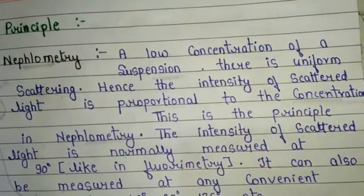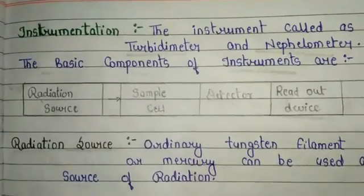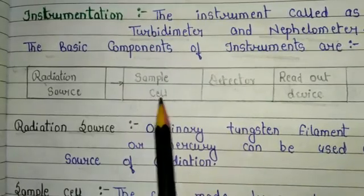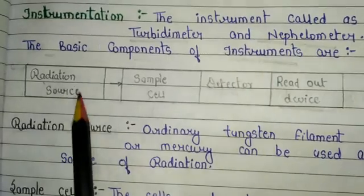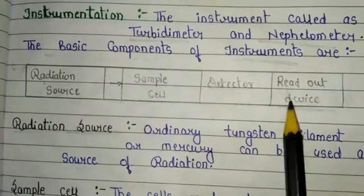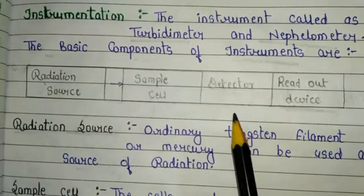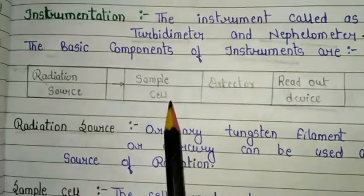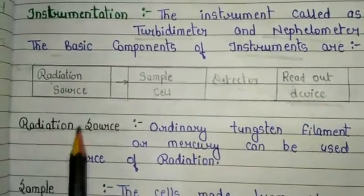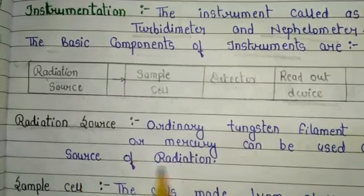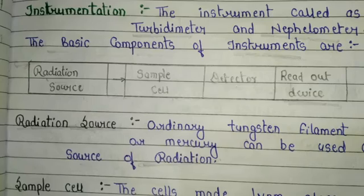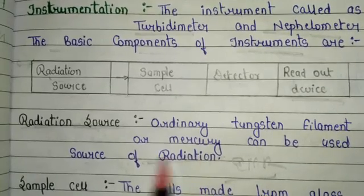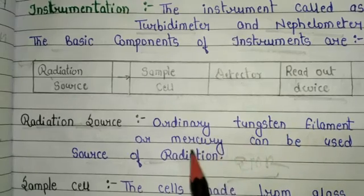Now the instrumentation part: the instruments are called turbidometer and nephelometer. The basic components of these instruments are: radiation source, sample cell, detector, and readout device. For the radiation source, an ordinary tungsten filament or mercury lamp can be used to produce electromagnetic radiation in turbidometry and nephelometry.